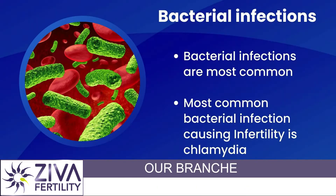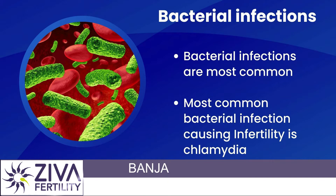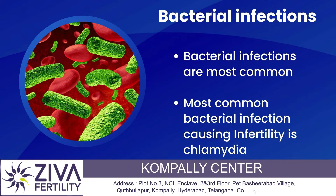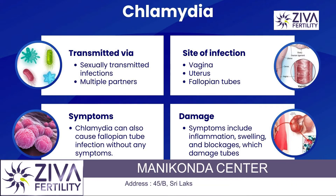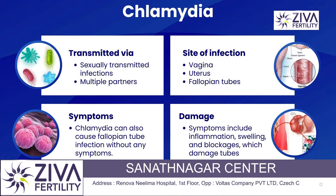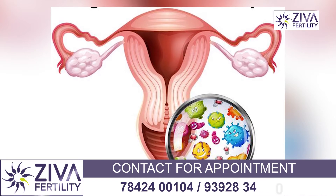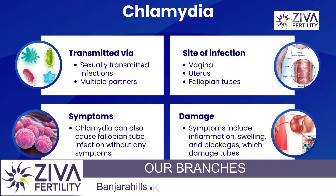Let's talk about bacterial infection first. The most common bacterial infection is chlamydia, which is caused due to multiple partners — it's sexually transmitted. The first site of infection is the vagina, and it travels into the uterus, through the uterus into the tubes, where the damage could be of various types.